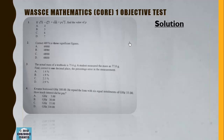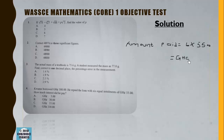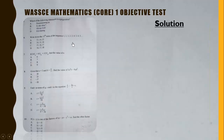Next, we find the amount paid: the number of payments times the amount per payment, which is 6 × 55 = 330 Ghana cedis. Subtracting the cost: 330 - 300 = 30 Ghana cedis profit.